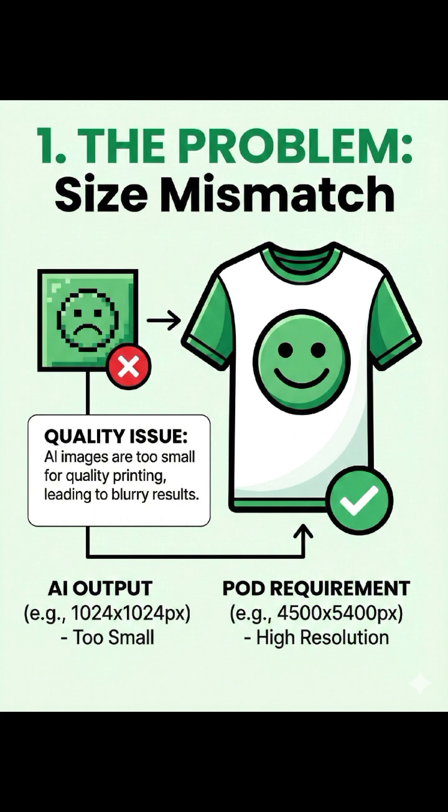Here's how to fix it using Canva. AI tools give you tiny 1024-pixel images, but for a t-shirt you need at least 4,500 x 5,400 pixels. So open Canva, create a custom design with those dimensions, and drop your AI image in.